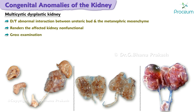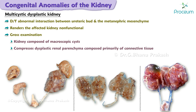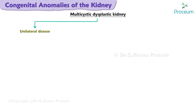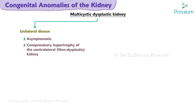Multi-cystic dysplastic kidney occurs due to an abnormal interaction between the ureteric bud and the metanephric mesenchyme. Multi-cystic dysplastic kidney renders the affected kidney non-functional. Gross examination shows a kidney composed of macroscopic cysts compressing dysplastic renal parenchyma composed primarily of connective tissue.